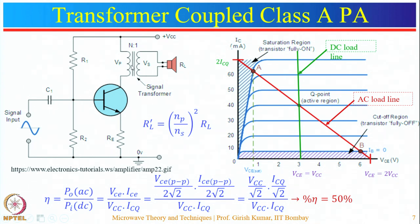Since V_CEQ equals V_CC for the transformer-coupled configuration, calculating the conversion efficiency gives 50 percent. By using a transformer-coupled class A amplifier, efficiency is improved from 25 to 50 percent. So to design a 10 watt amplifier, you only need to supply 20 watts in this case.